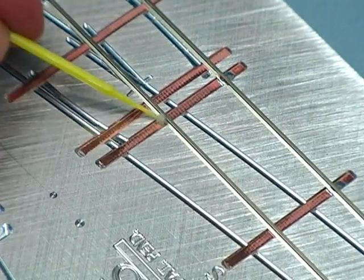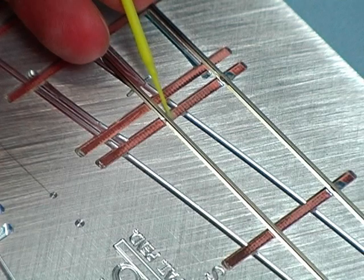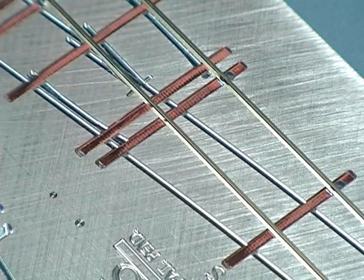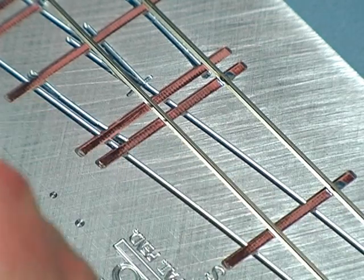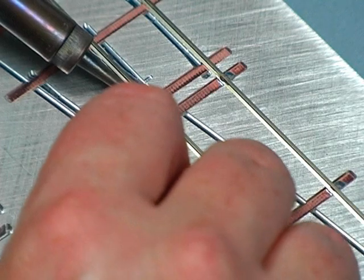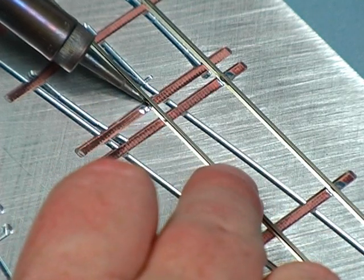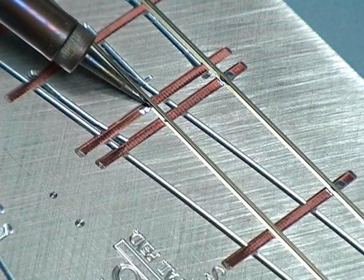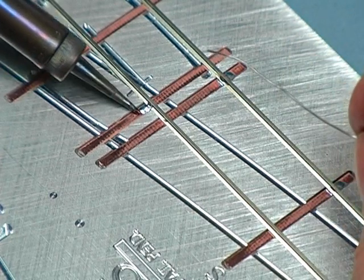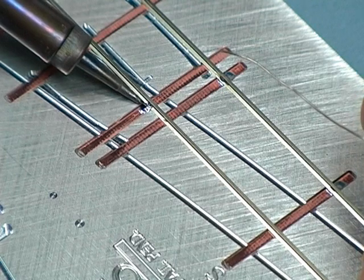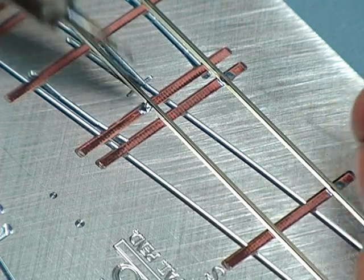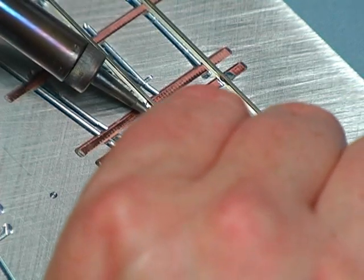Let me do a couple more solder joints. Let's do one down here. A little bit of flux on both sides. Lead in there. It's not wicking quite as aggressively, and I've also got a ball there. See, by holding the heat, that should be flowing a lot nicer than it is. Let's try another one.